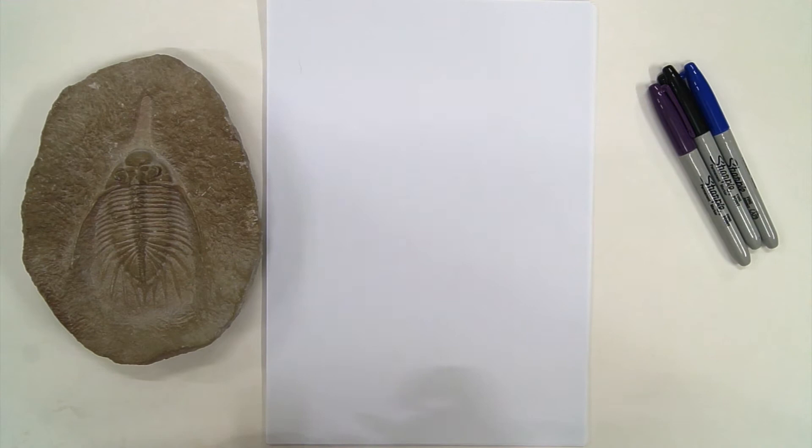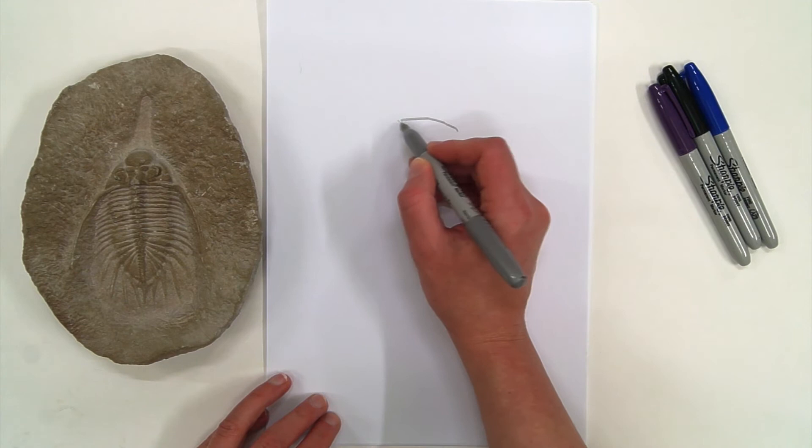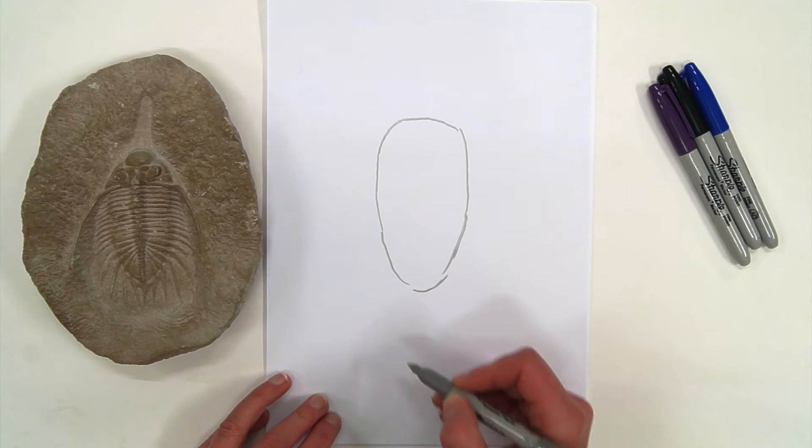So as you're drawing, you try to get an idea of a mode of life. So this trilobite has a rough shape, so I'm going to instead of doing a light sketch, I'm using silver to get the overall shape.